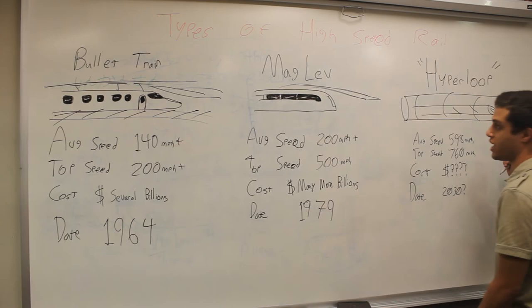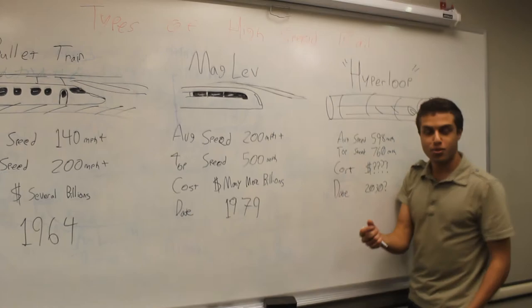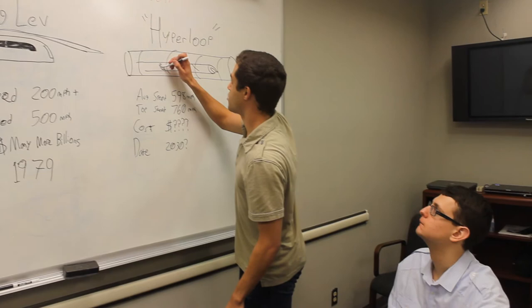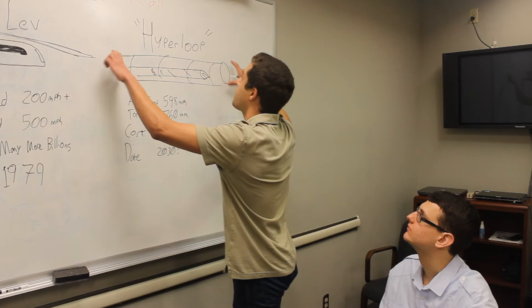However, given the Hyperloop, it doesn't have to be aerodynamic. Because it's in a contained system that doesn't have any air, it's running in a tube. Pretty much what it does is, these people sit down inside it, this little contraption here. And this is the thing that moves.